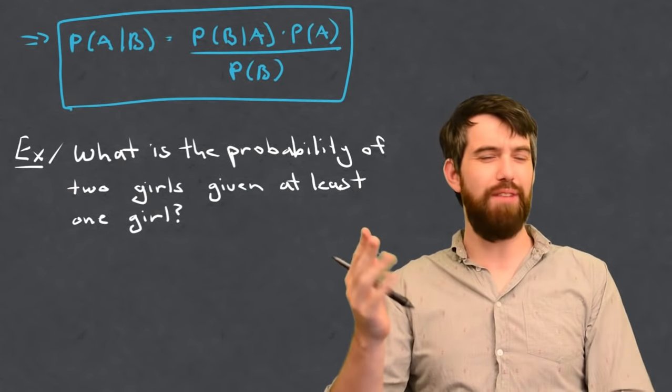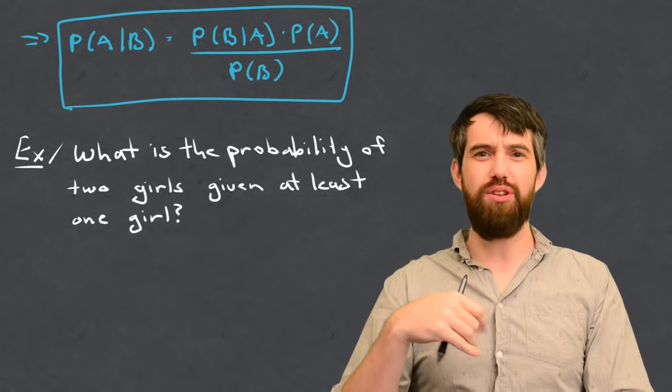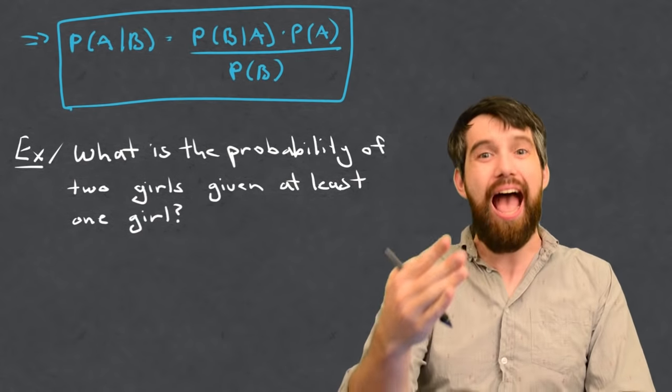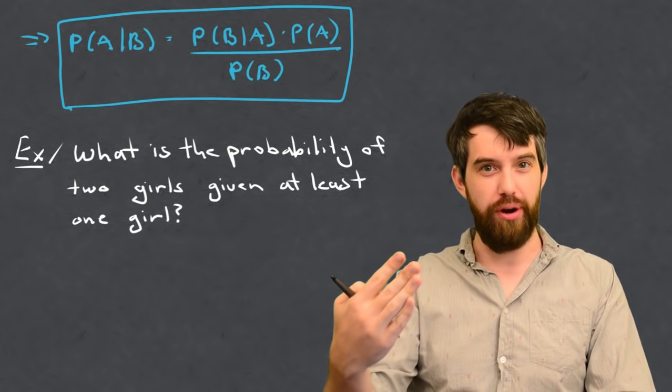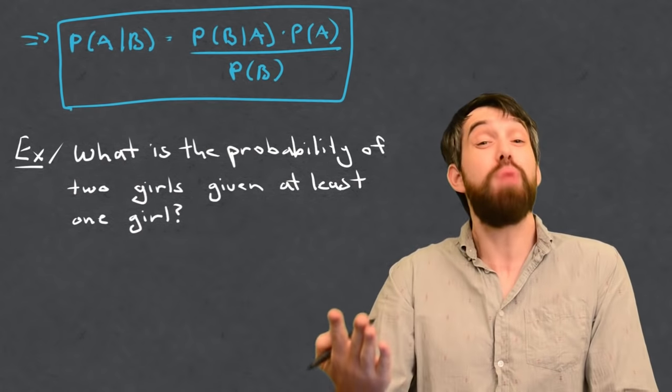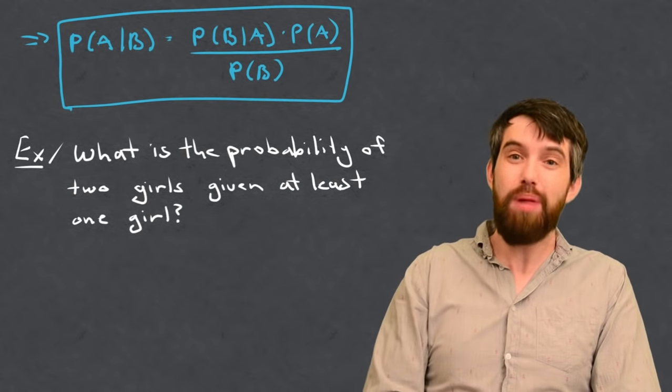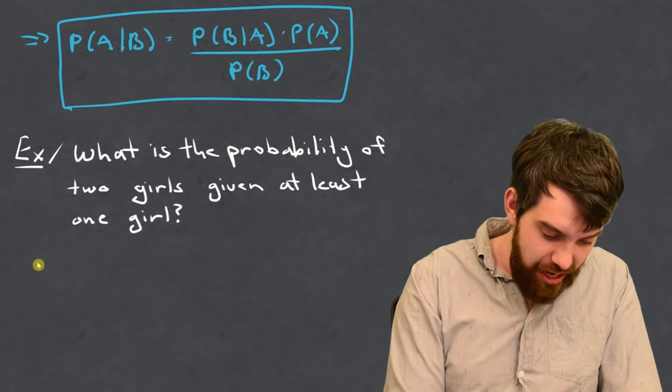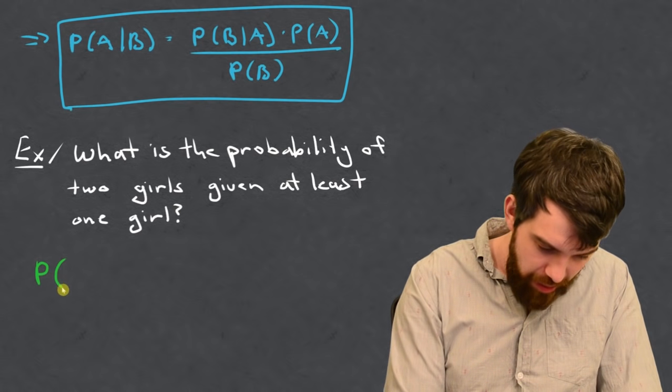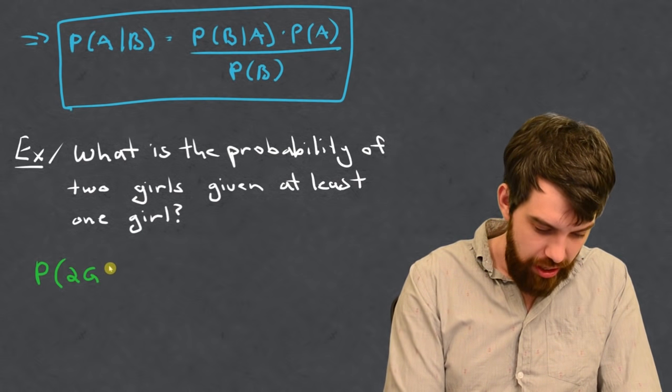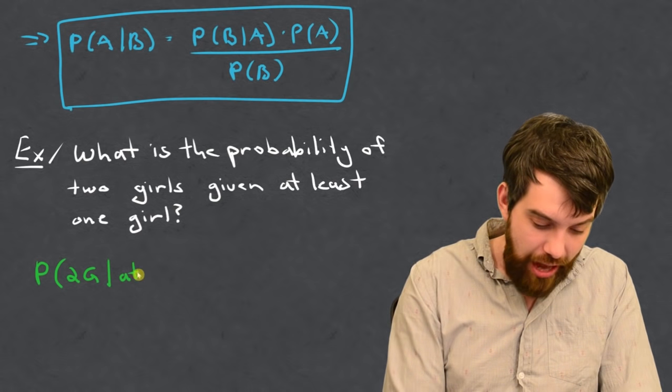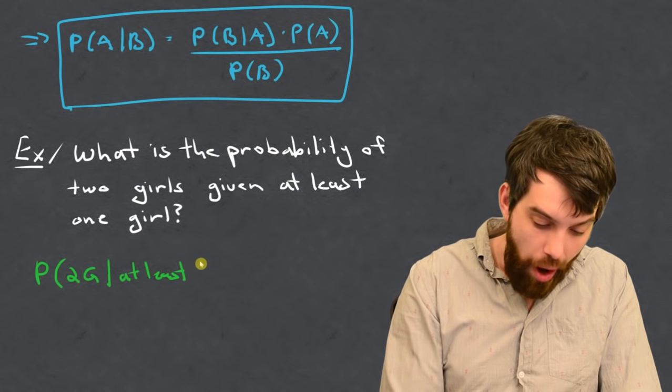So, the example was if you have a couple and they've got two different children, and you're asserted that at least one of those children is going to be a girl, then what's the probability that both of the children are going to be a girl? So, let's plug this into the formula.